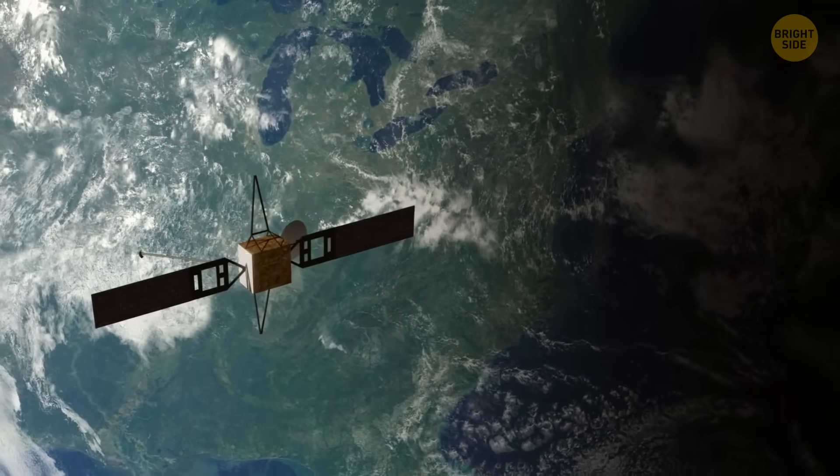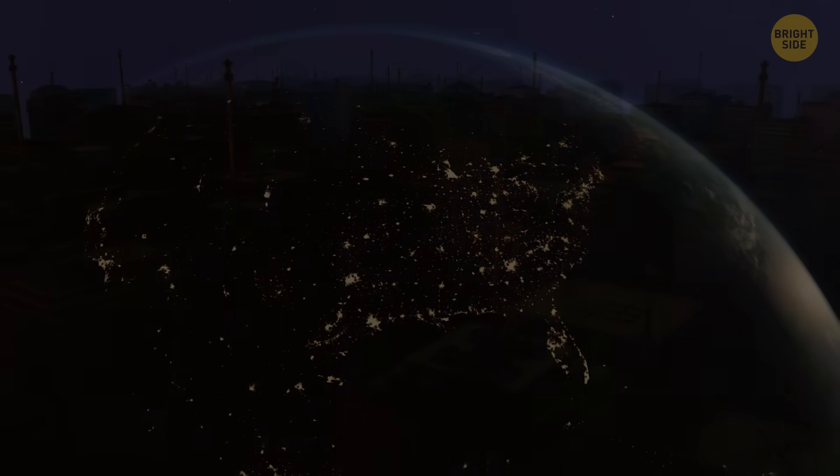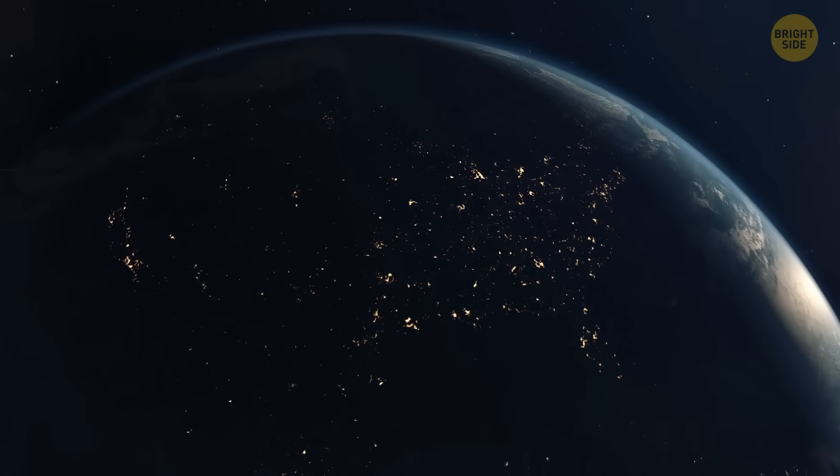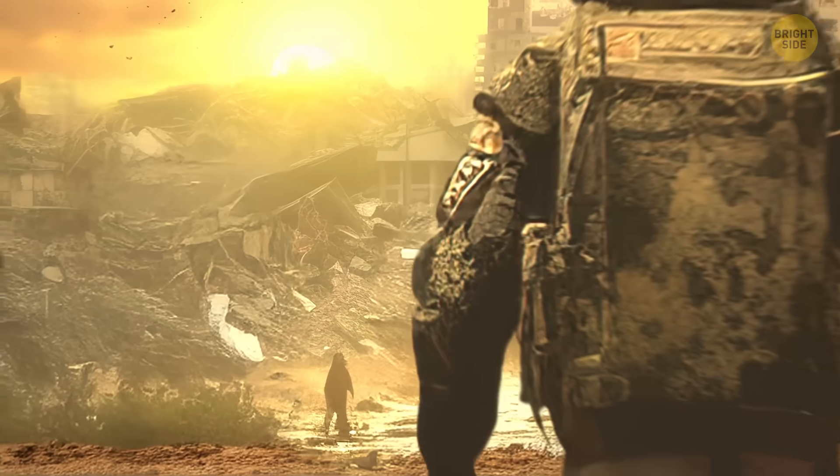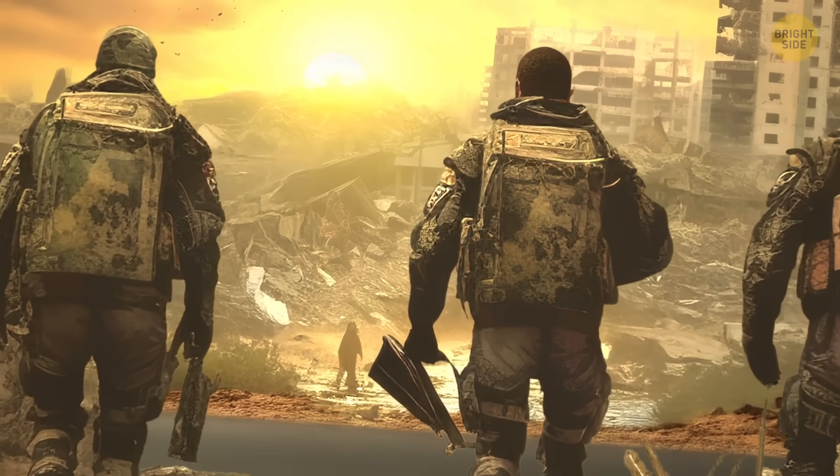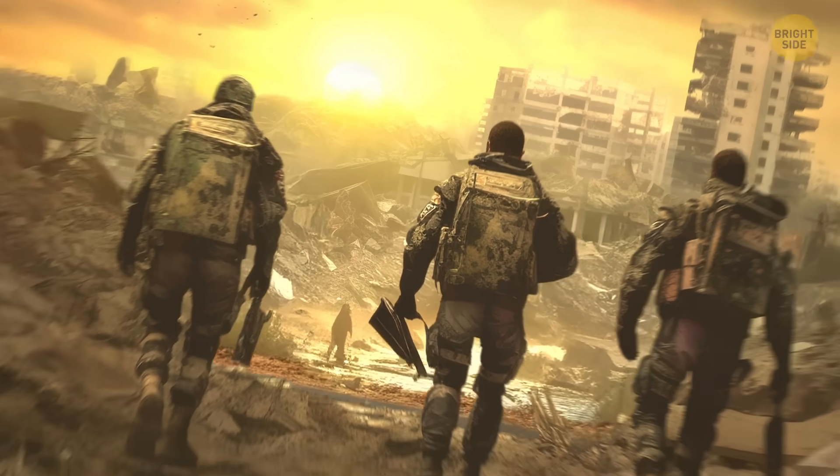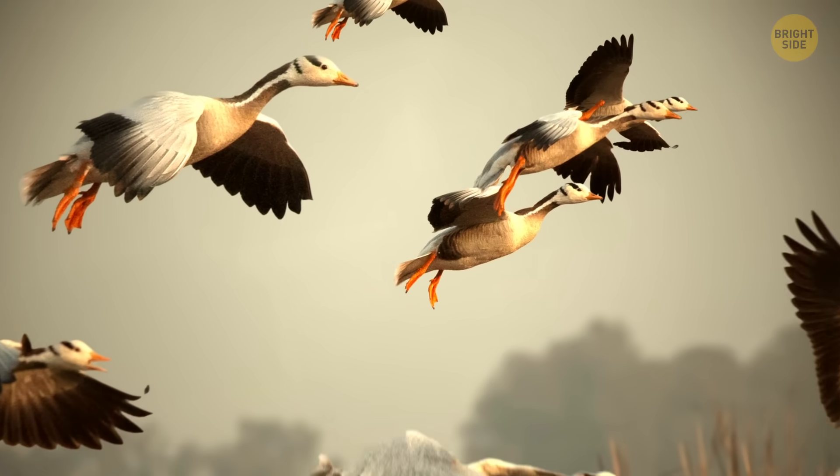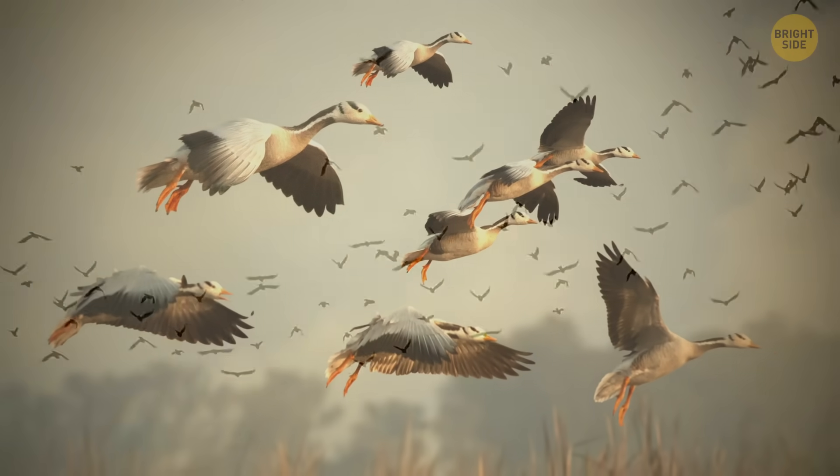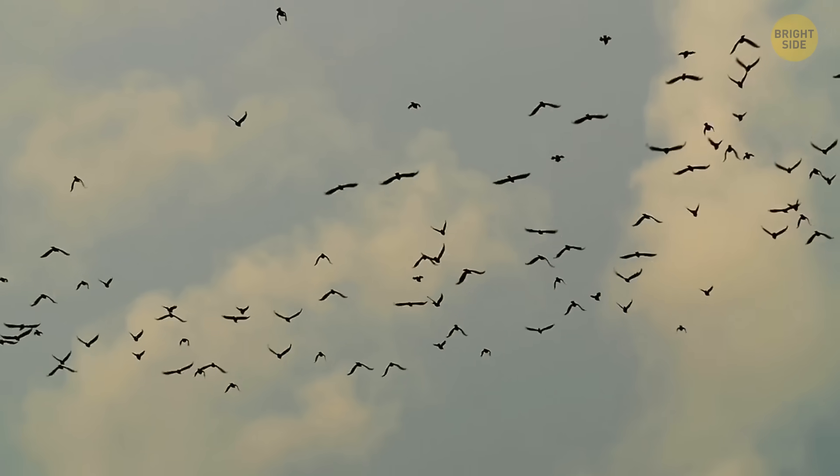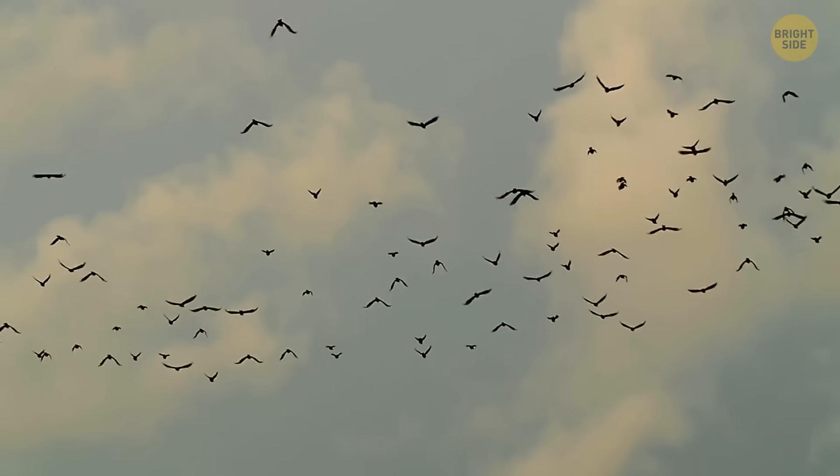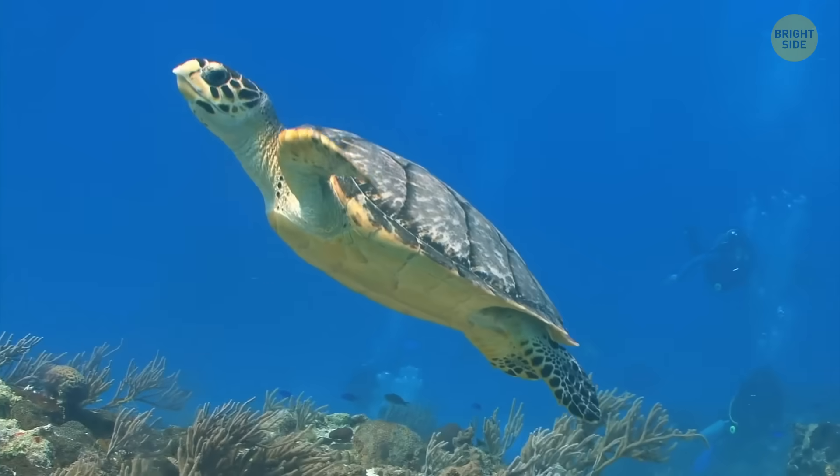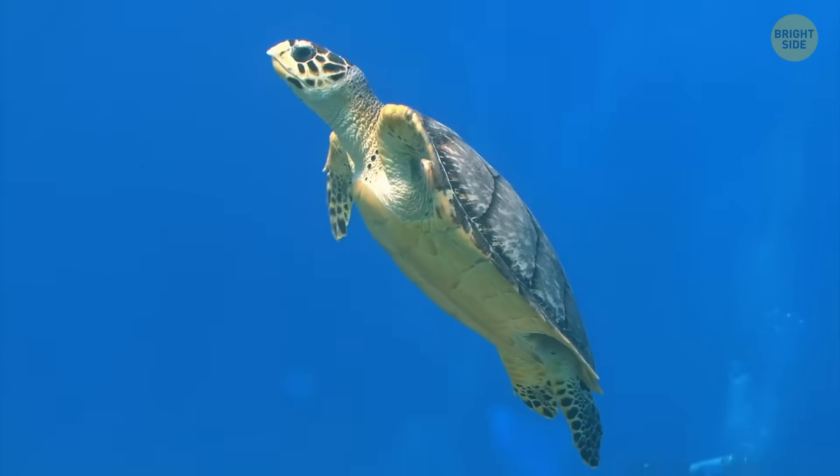Electronics would fail, power grids would collapse, and communication systems would go dark. But the effects wouldn't be limited to just humans. All forms of life would be at risk. Many animals, like migratory birds and turtles, rely on Earth's magnetic field for navigation. With it gone, they would be completely lost. Birds would lose their sense of direction, and turtles wouldn't be able to find the beaches where they need to lay their eggs.